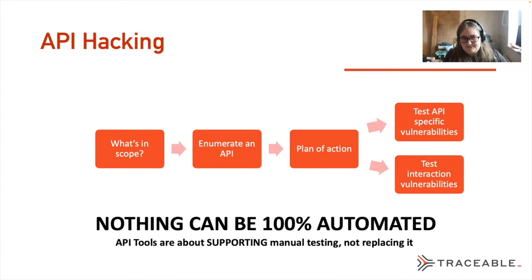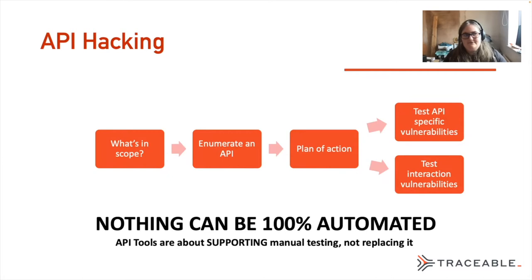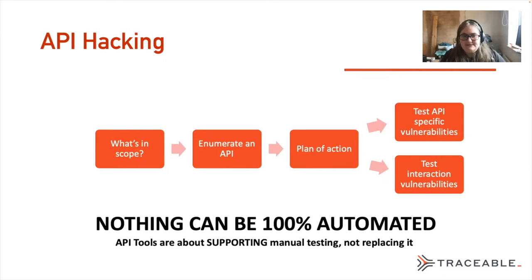The next step is to enumerate an API. I need to find out all the information the blue team already knows, find out every single API endpoint, and find out exactly what inputs they take. I then come up with my plan of action, looking at what is actually exposed, and thinking about what kinds of vulnerabilities I'm going to be experiencing.